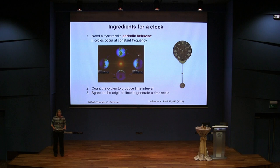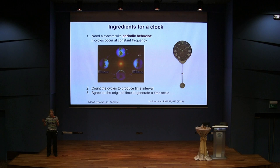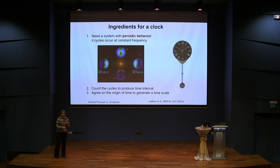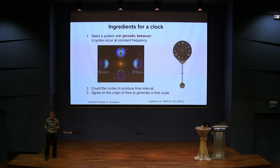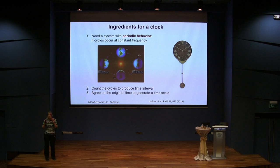So first, let's talk about what atomic clocks are. What do you need to build a clock? First, you need some sort of system with periodic behavior. Let's start with Earth going around the Sun — it's pretty periodic, and if you need to know when to harvest your potatoes, that's pretty good. A pendulum has a period of about half a second, which allows you to tell when dinner time is, but it's not good enough for GPS. The larger the frequency of your periodic behavior, the more precise your clock will be. Then you need to count the cycles to produce a time interval, and you have to agree on the origin of time.